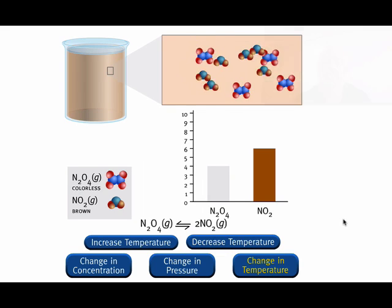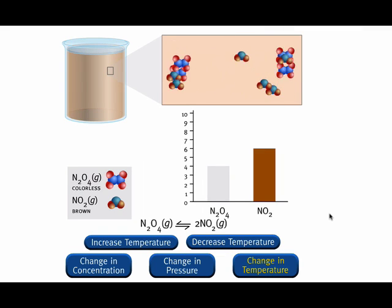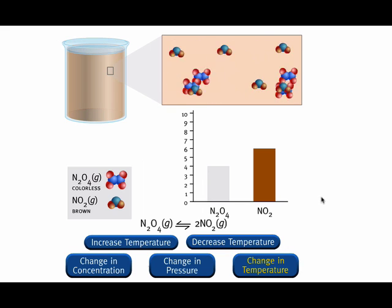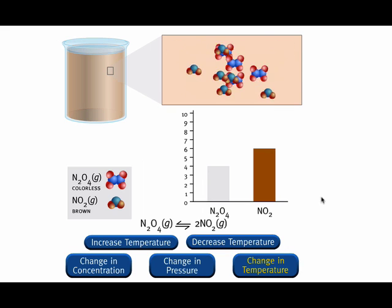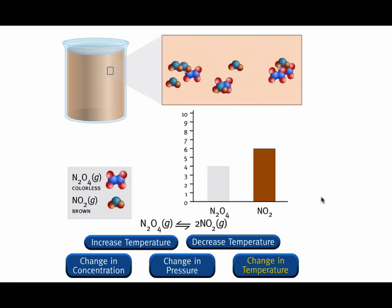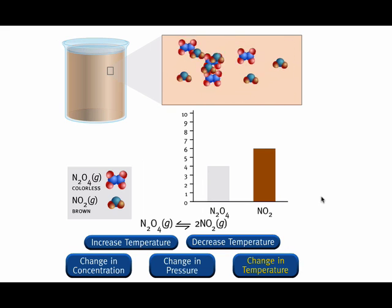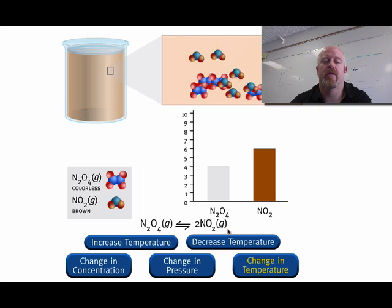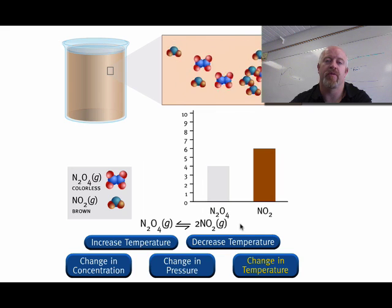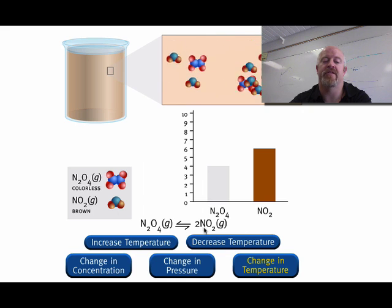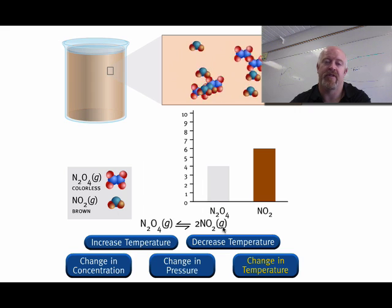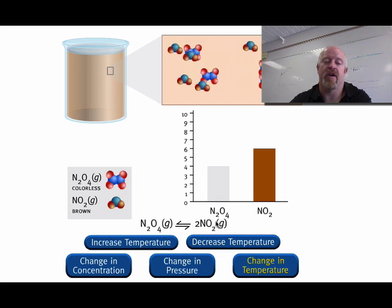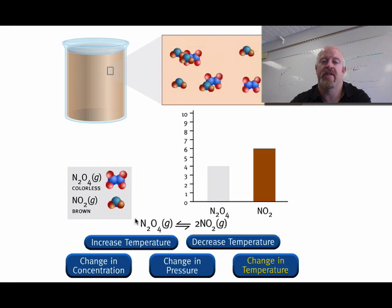Now let's move on to temperature. Consider the following reaction at equilibrium: N2O4 in equilibrium with nitrogen dioxide (NO2). The ratio of N2O4 molecules to NO2 molecules is 2 to 3. Because NO2 is a brown gas, the equilibrium mixture has a brown color. Temperature can only affect the reaction based on which direction is exothermic versus endothermic - one way is always exothermic and the other direction is endothermic.